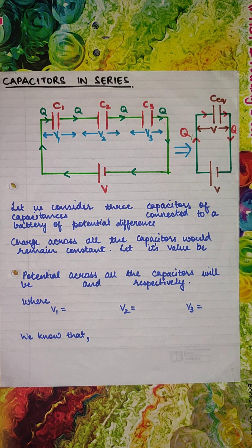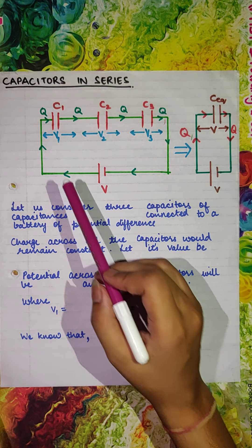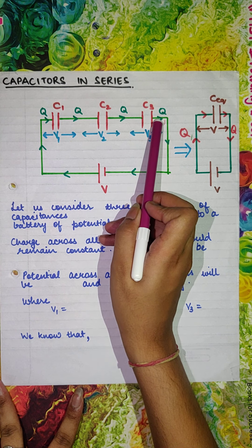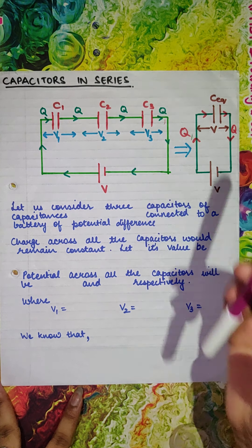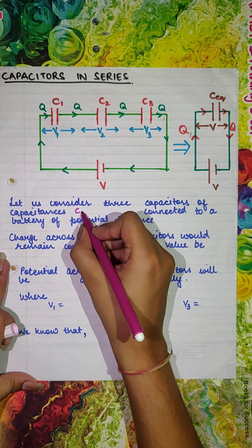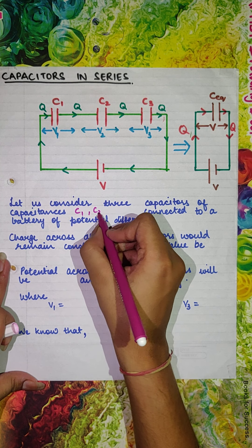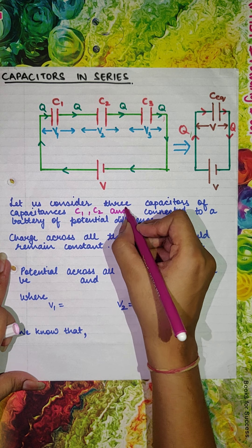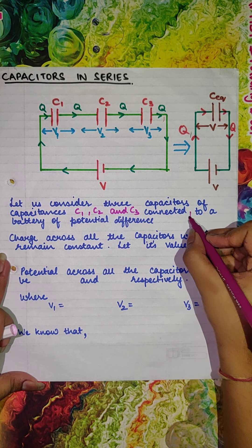Hello students, the next session we are going to study is session 2.6. In session 2.6 we are going to study about combination of capacitors and the first topic we are going to take is capacitors in series. You can see a circuit diagram in which we have connected 3 capacitors of capacitances C1, C2 and C3 respectively in series combination.